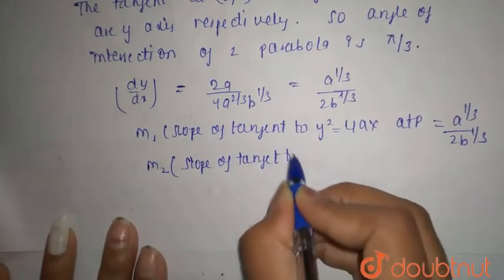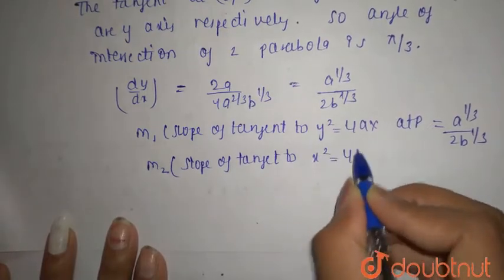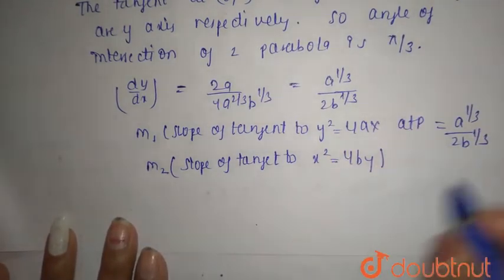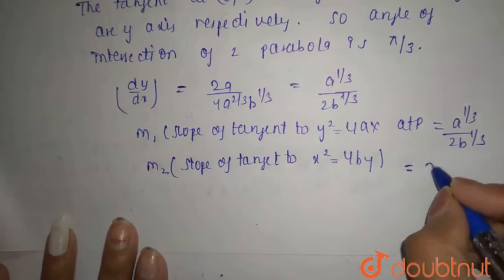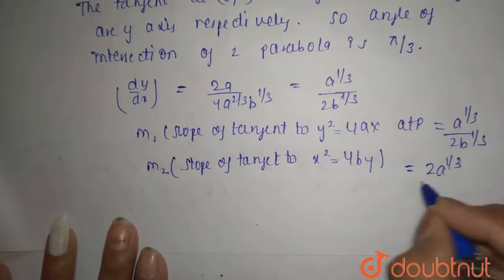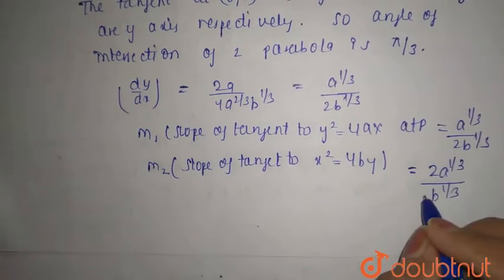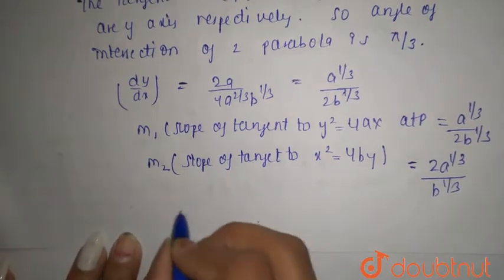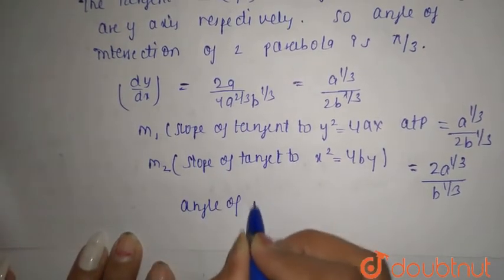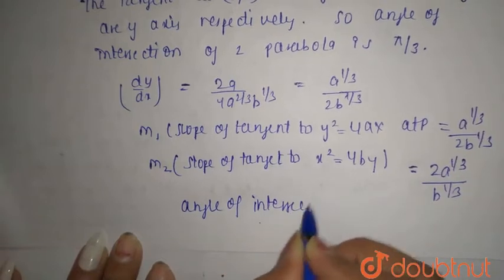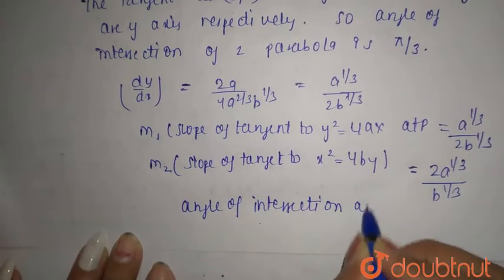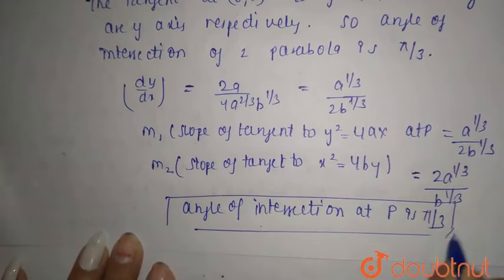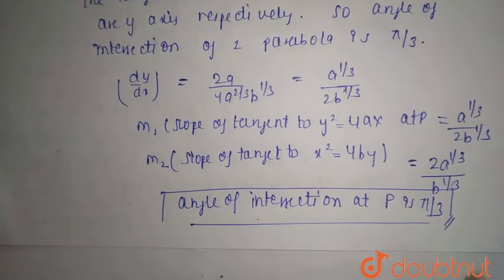Similarly, m₂ is the slope of the tangent to x² = 4by at point P, which equals 2a^(1/3) / b^(1/3). The angle of intersection at point P is π/3.